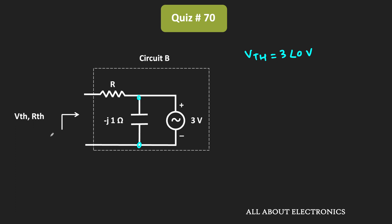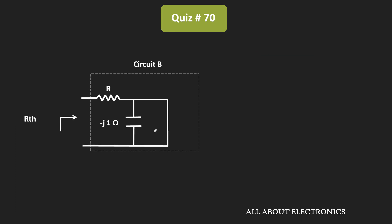Similarly, to find the Thevenin's equivalent resistance, let us consider all the independent sources in the circuit as zero. That means this 3V voltage source will act as a short circuit, and therefore this capacitor will also get short circuited. So the Thevenin's equivalent resistance seen from this side is Rth = R. For circuit B, Rth = R and Vth = 3V.